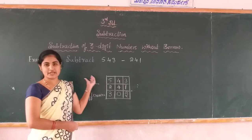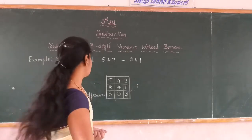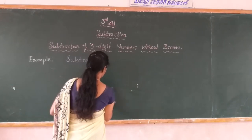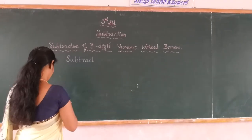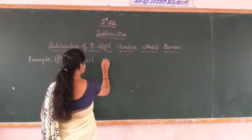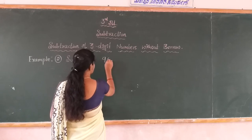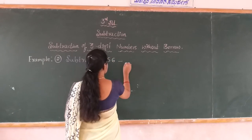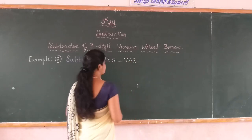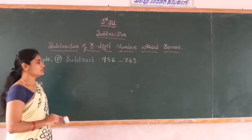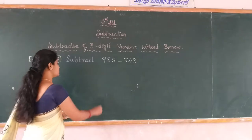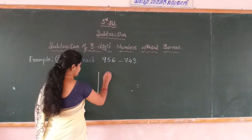Next I will take one more example. Example 2: subtract 956 minus 743. This is one more question for without borrow subtraction. First you write the subtraction box.